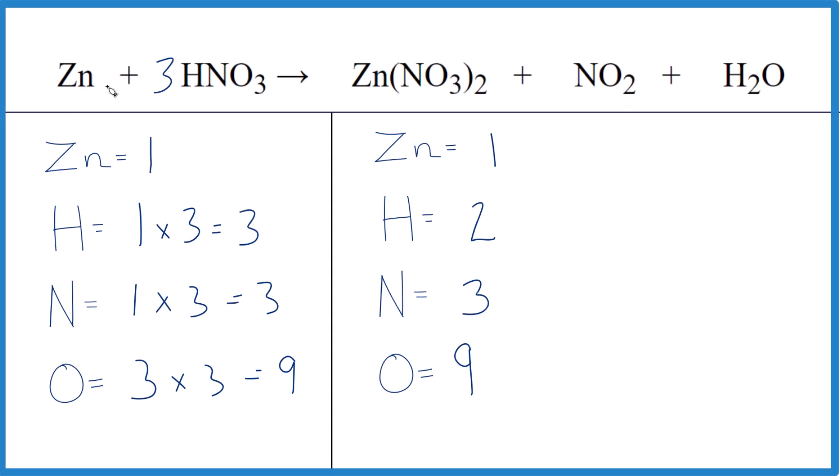So I was asked to balance this equation here. We have zinc plus nitric acid. We end up with zinc nitrate, this nitrogen dioxide here, and water. Typically when you do this reaction, you're going to get zinc nitrate and hydrogen gas. But under certain conditions, this can happen. So we're going to try to balance this equation.